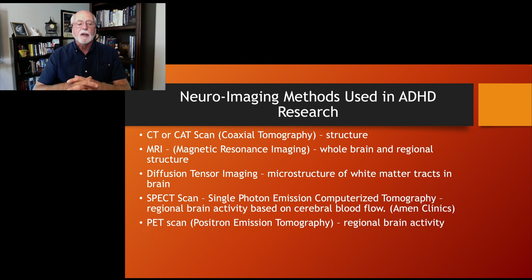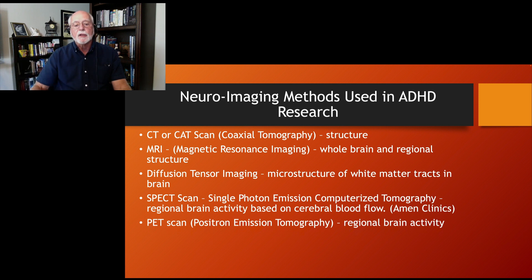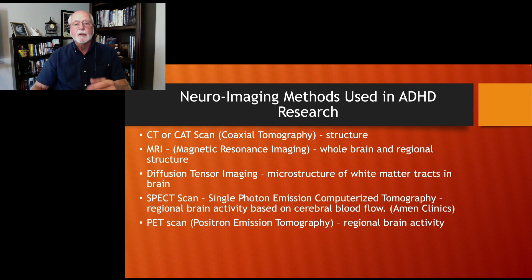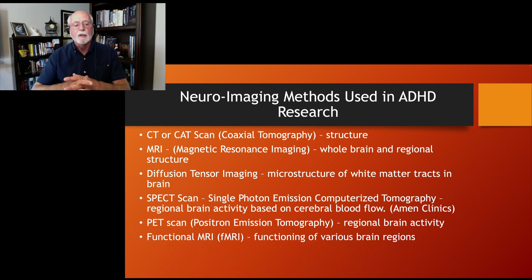The next one is positron emission tomography, known as the PET scan. It also looks at brain activity using a different form of radioactive substance exposure and detects that radioactivity within the brain. The exposure to radiation in these studies is very, very small — still something to pay attention to, but quite small. It's not like you're making somebody radioactive, but it is a concern when it comes to the ethics of using these scans — they have to be justifiable given the exposure.